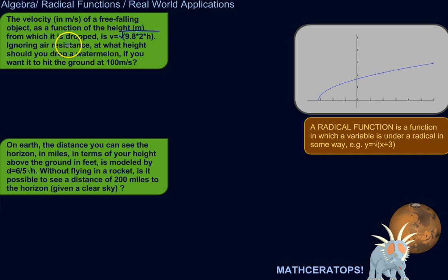And that's ignoring air resistance and everything. At what height should you drop a watermelon if you want it to hit the ground at 100 meters per second? So, we're ignoring the fact that there will be a terminal velocity of the watermelon, a point at which the downward force of gravity is matched by the force of the air resistance. So, ignoring that, how high should we drop this thing from if we want it to get going up to 100 meters per second by the time it hits the ground?